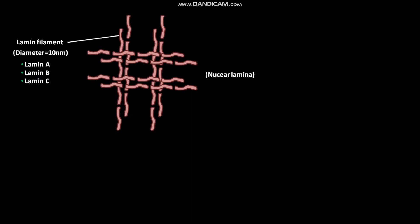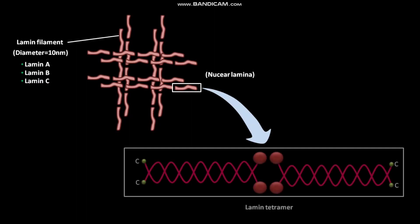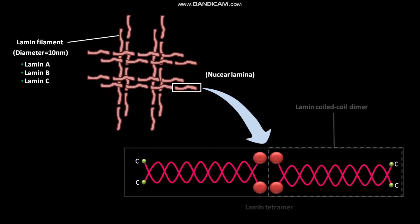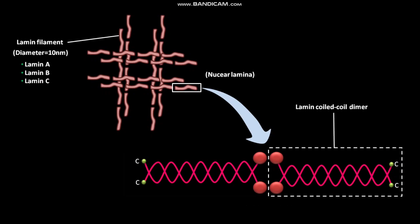An individual lamin filament consists of a lamin tetramer. A lamin tetramer consists of two lamin coiled-coil dimers.